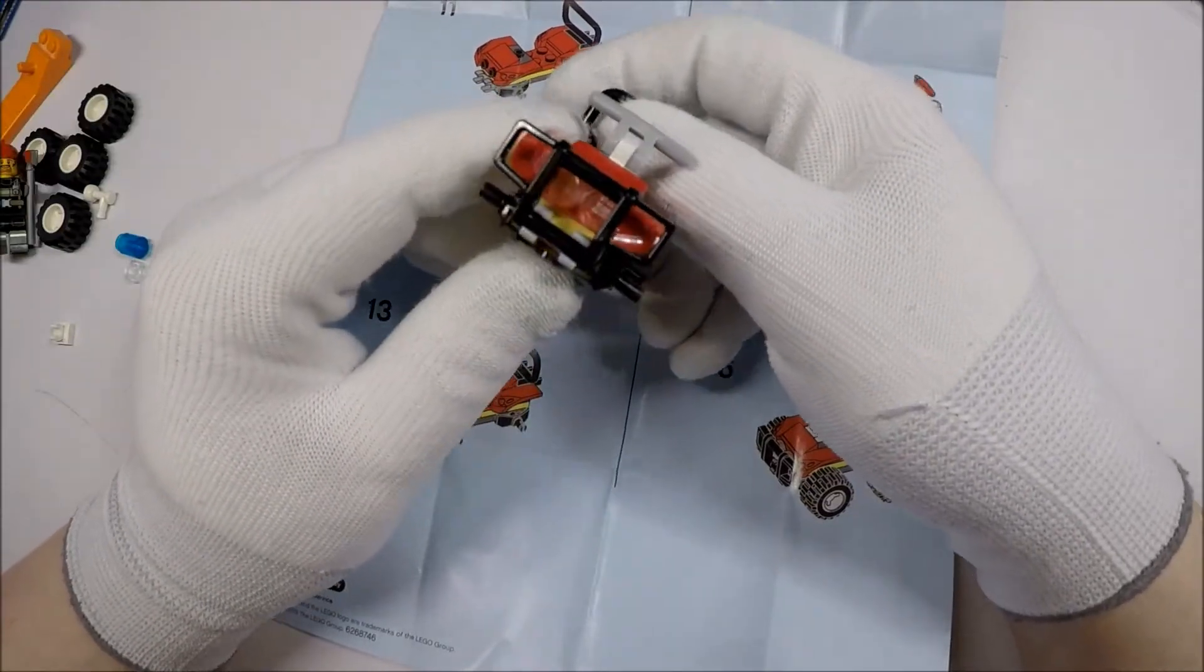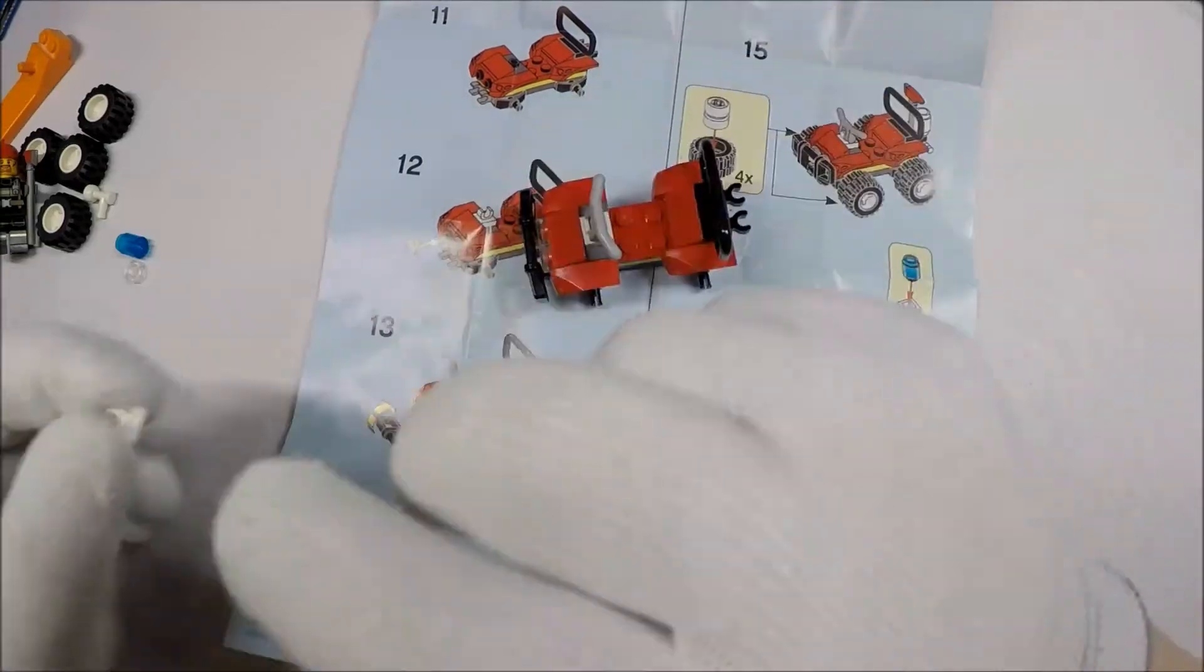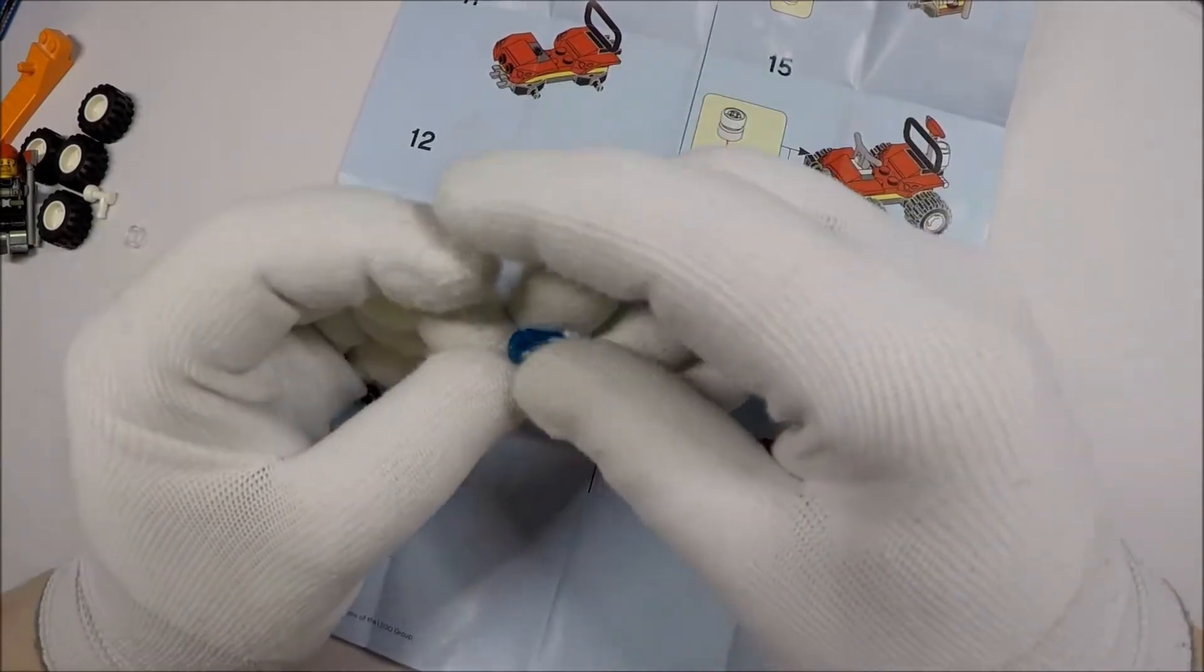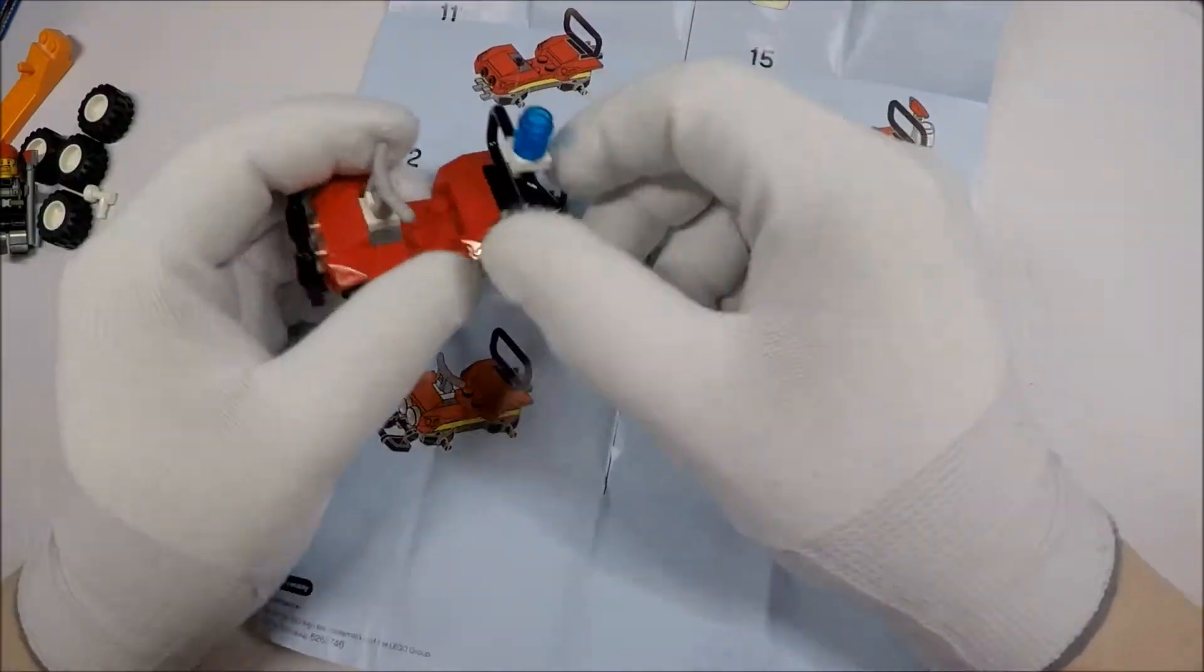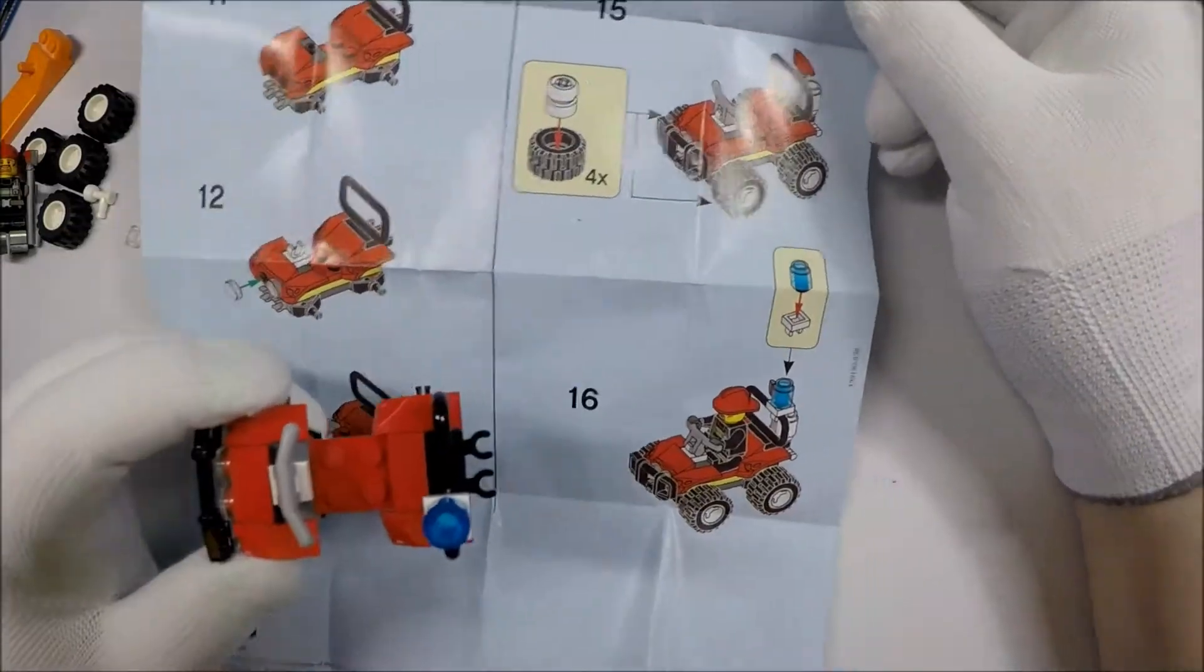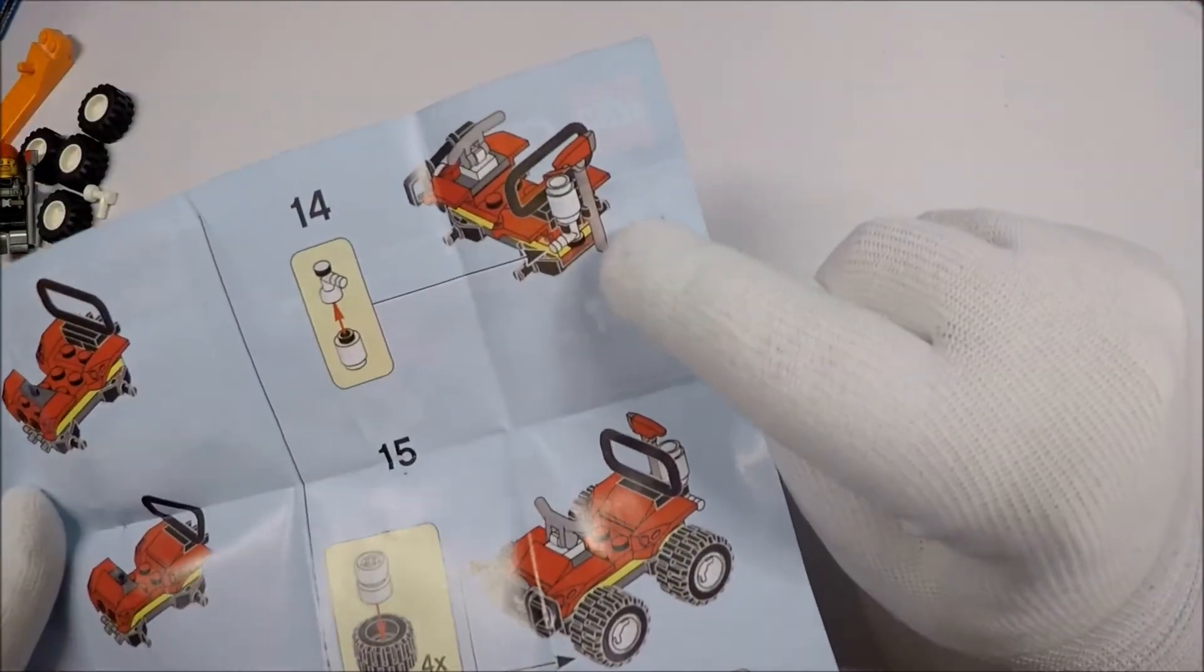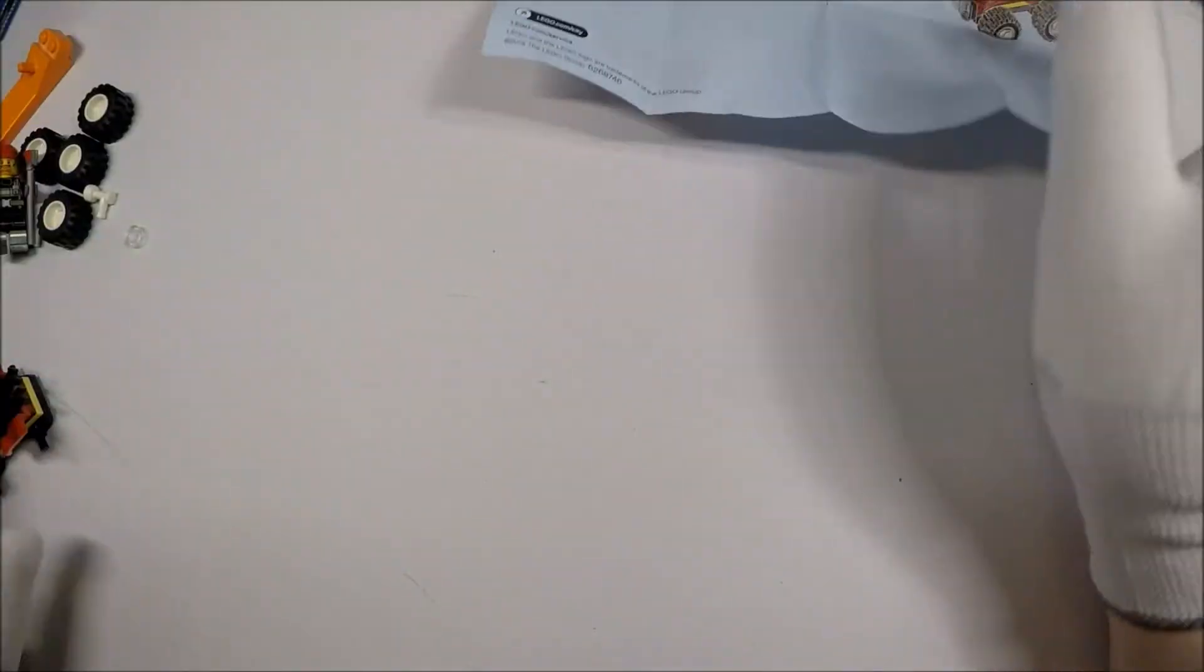And then the kind of bumper grill thing goes up there. That looks really good. I like the look of that. Alright. And then we're going to do the blue light thing on the top. And this is going to clip up to here. I'm not crazy about the look of that. I feel like it should be a little better attached. But yeah. You can see right there. That's where we attached the fire extinguisher. And that's where we attached the axe, where we're so inclined.